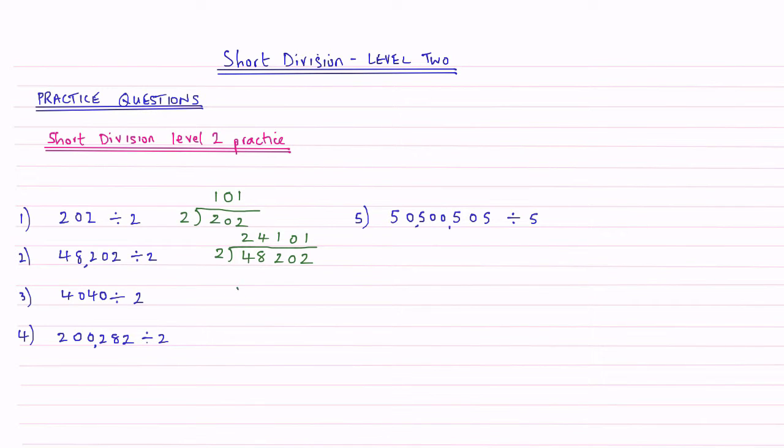Question 3 then, curly brace, line. So 4,040 divided by 2. How many 2s going to 4? That's 2. 2s into 0, none. 2s into 4, 2. 2s into 0, none. So that's 2,020.